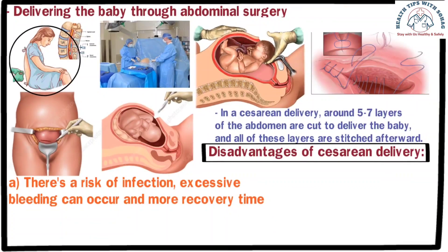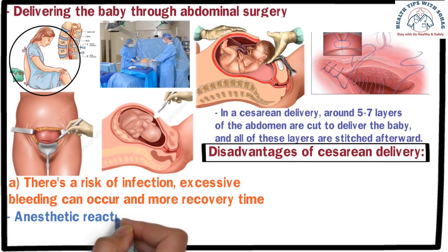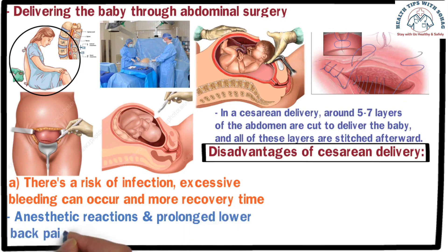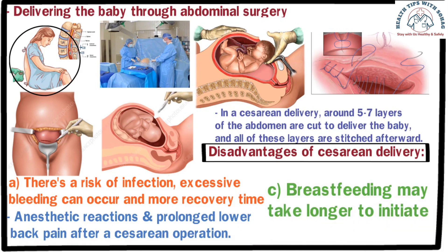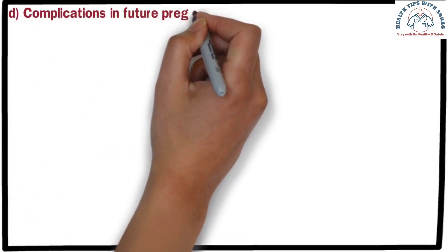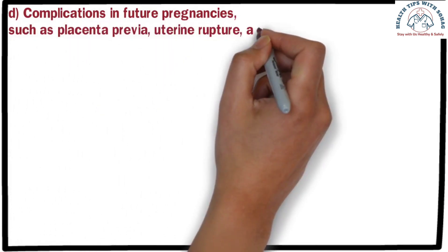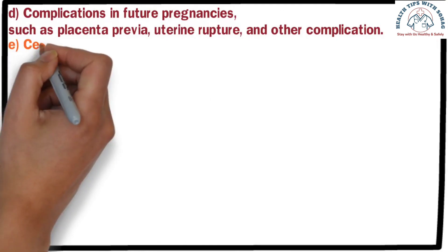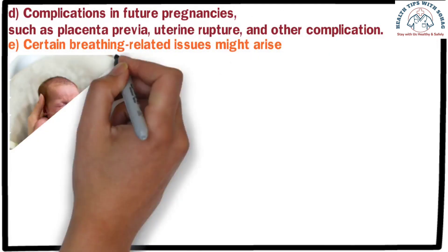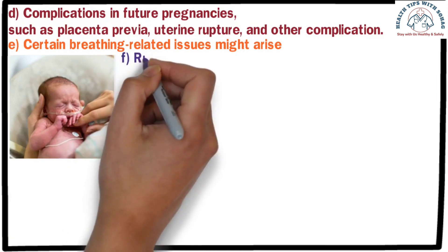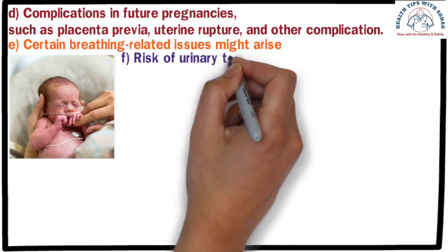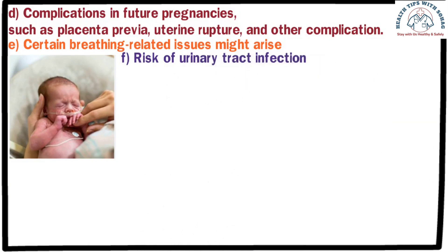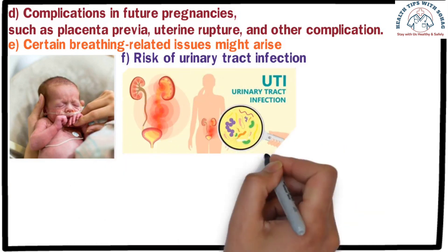The nerves around the injection site can also be affected, leading to prolonged discomfort. This is why some individuals experience prolonged lower back pain after a caesarean delivery. Number three: breastfeeding may take longer to initiate after caesarean delivery. Number four: caesarean delivery carries a possibility of complications in future pregnancies, such as placenta previa, uterine rupture, and other complications. Number five: certain breathing-related issues may arise in babies born by caesarean delivery that typically do not occur in babies born through normal delivery. Number six: there is a risk of urinary tract infection and injury to the urinary bladder during this surgical procedure.